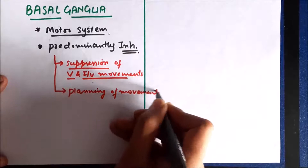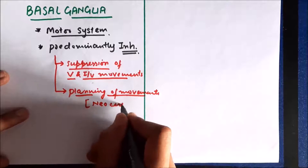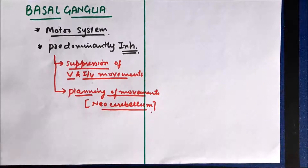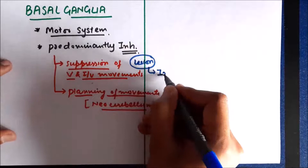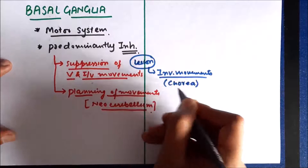Basal ganglia also play a role in the planning of movements. Another structure which plays a role in planning of movements is the neocerebellum. So neocerebellum and basal ganglia together play an important role in the planning of various movements. If due to some reason there is a lesion at the level of basal ganglia, this suppression of involuntary movements will not occur. As a result, there will be frequent involuntary movements and the person will develop a condition called chorea.